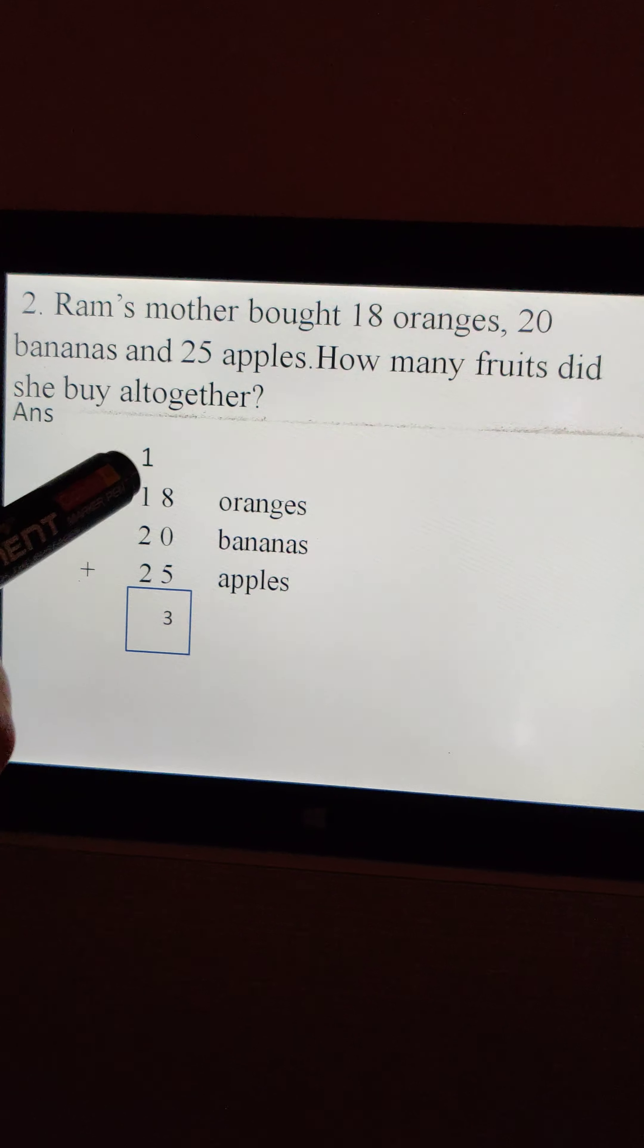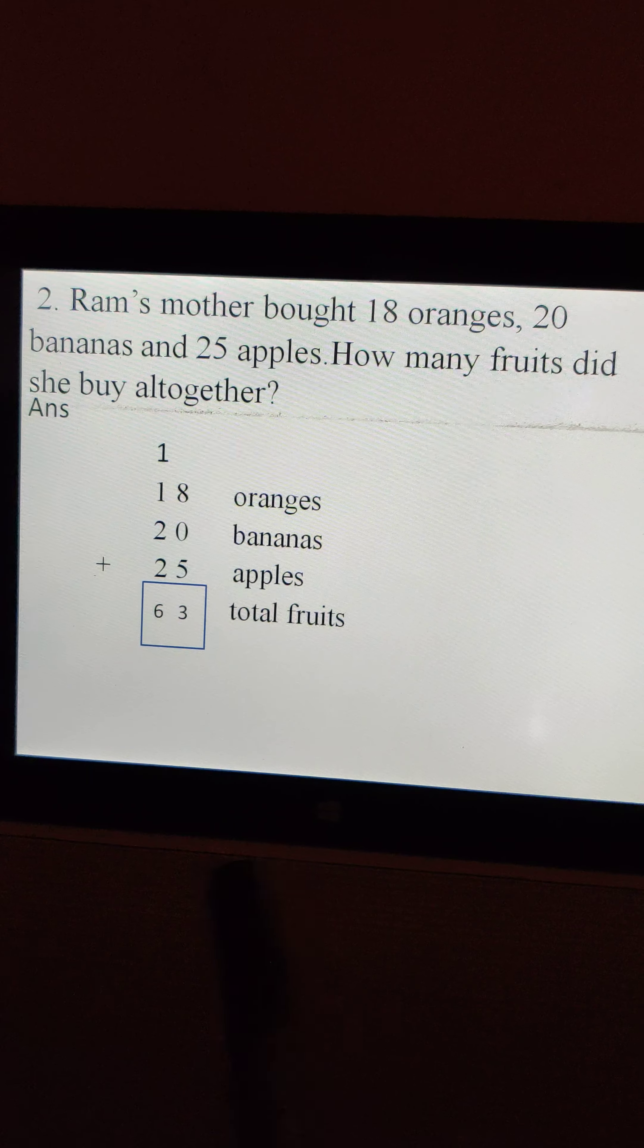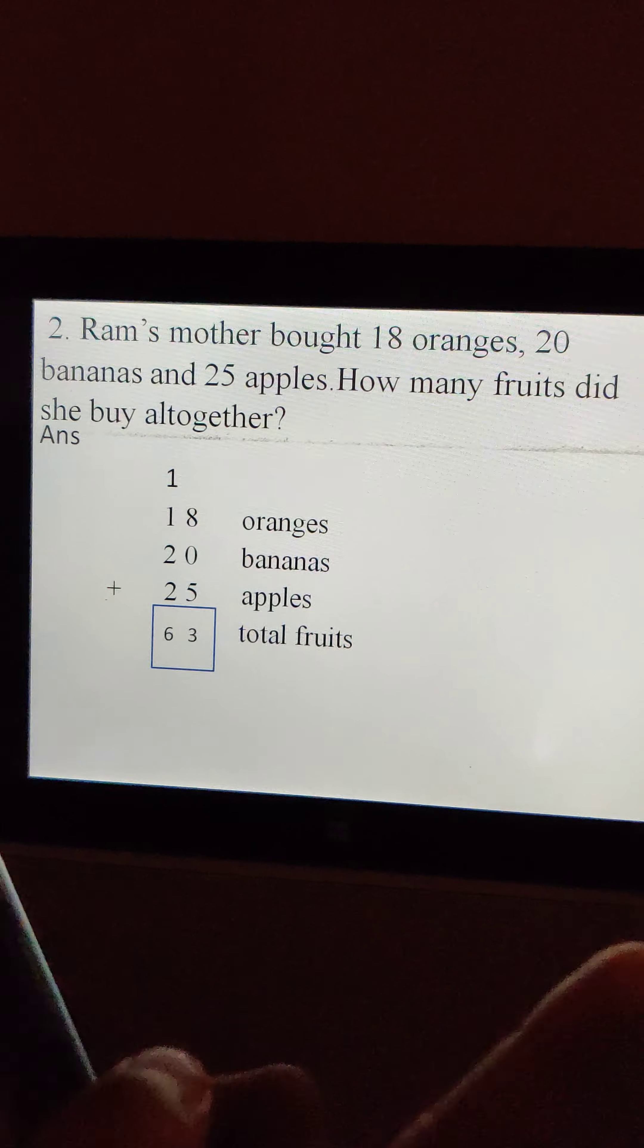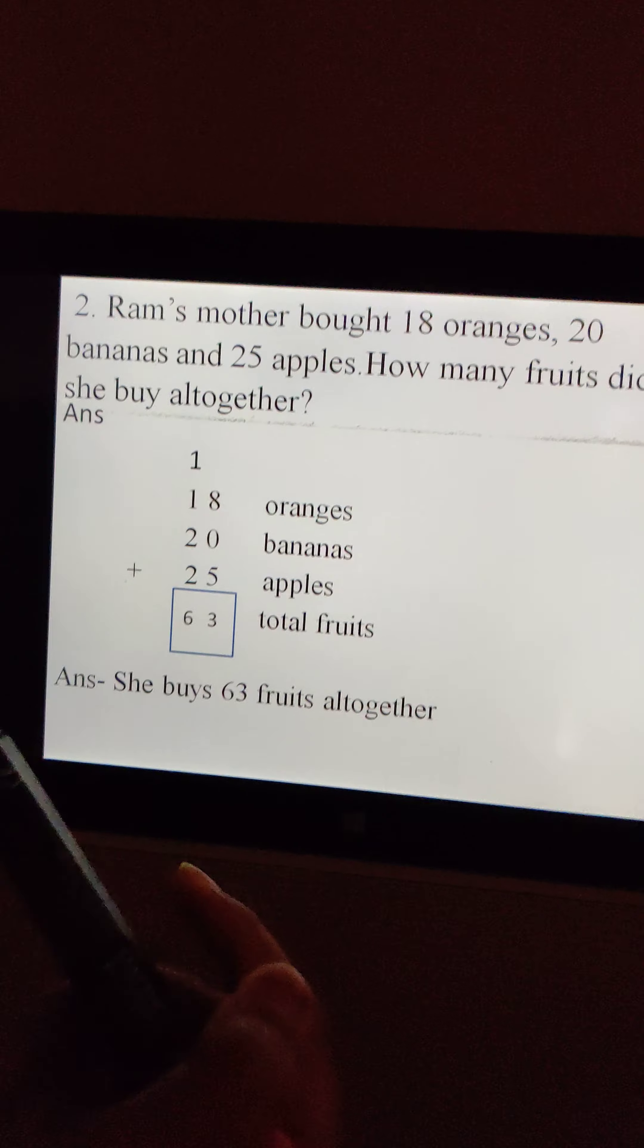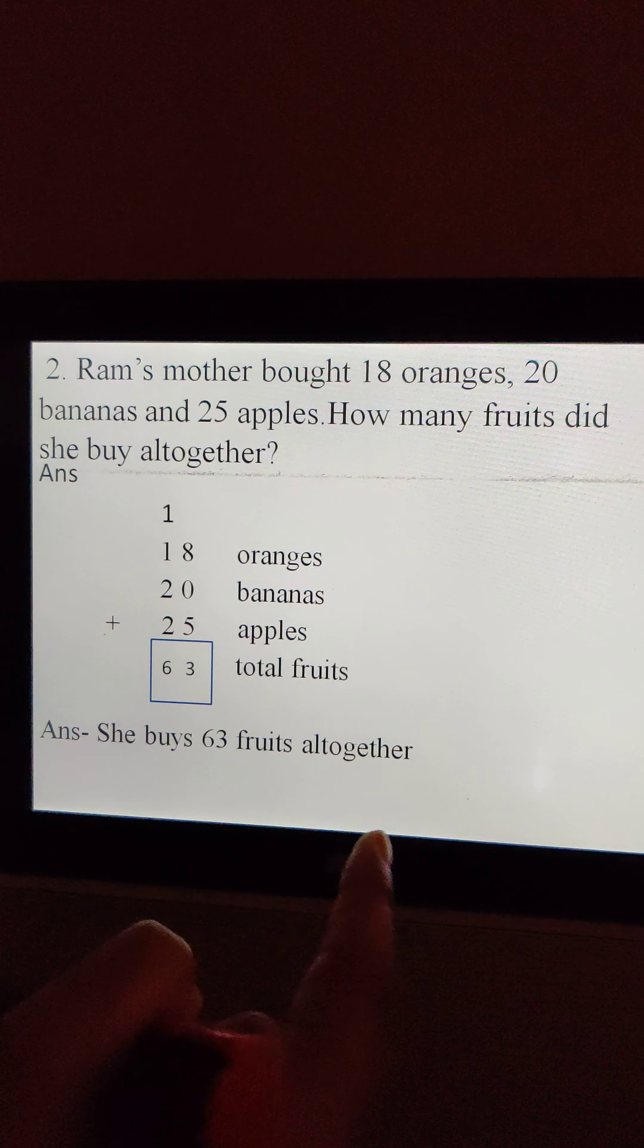And then 2 plus 2, 4 plus 1, 5 and 6. So 63. What are 63? Total fruits. And now one more thing. Yes, we need to write the answer. She buys 63 fruits altogether.